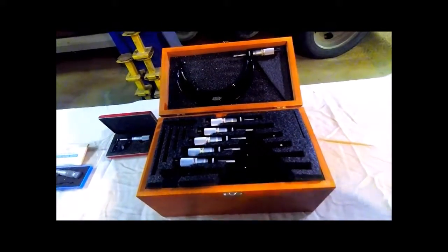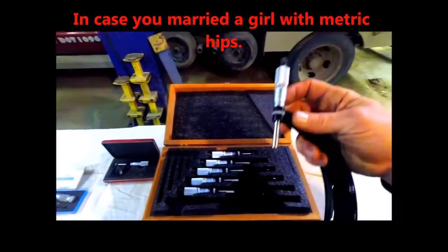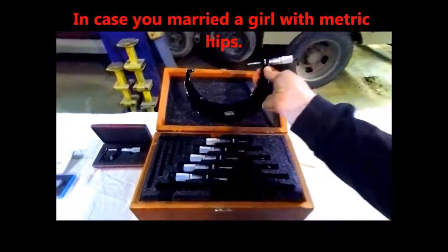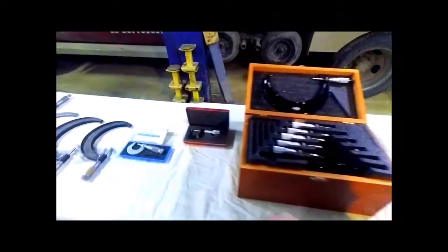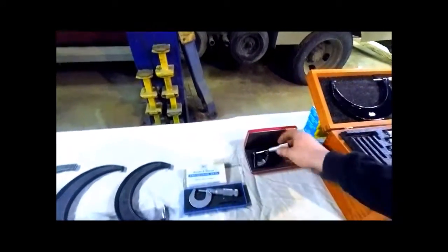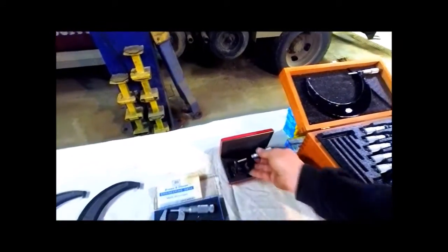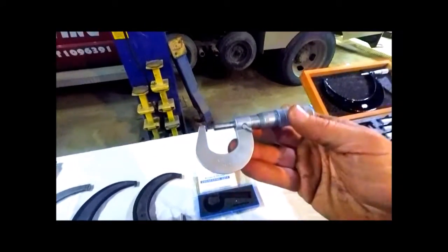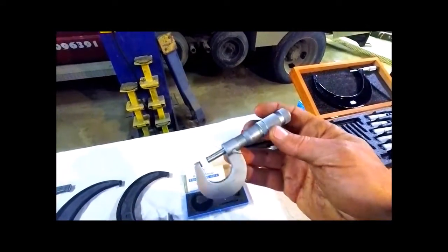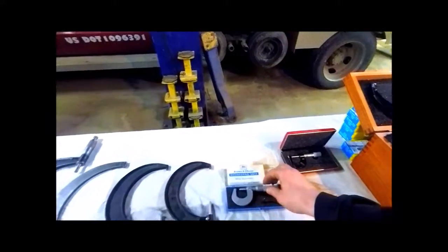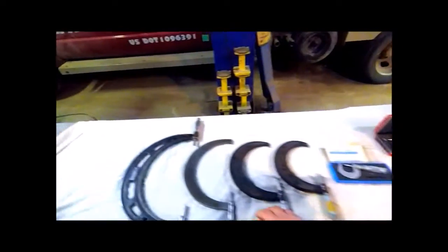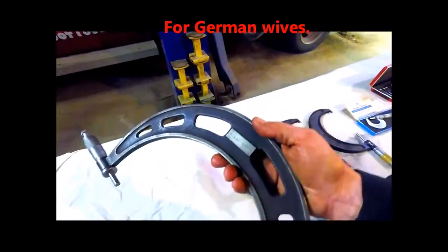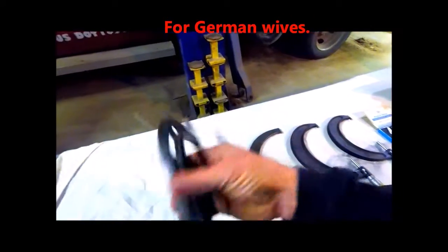Micrometers also come in the metric style. We have another wall thickness micrometer. This is a 0 to 25 millimeter micrometer here. This is a Brown and Sharpe. We've got them in stock here in the shop up to this Mitutoyo, which is a 200 to 225 millimeter.